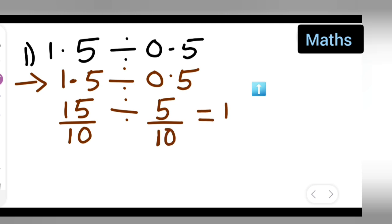Now this is equal to 15 upon 10. Multiply this with the reciprocal of this. 5 upon 10, the reciprocal is 10 upon 5.